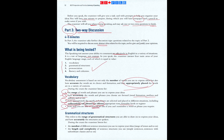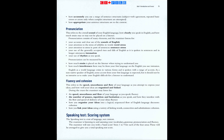Grammatical structures refers to the range of grammatical structures you are able to use to express your ideas and how accurately the structures are spoken. The examiner listens for the number of different sentence structures you use, the range of tenses, the length and complexity of sentence structures such as simple sentences and sentences with subordinate clauses, how accurately you use a range of sentence structures — such as subject-verb agreement — whether there are repeated basic errors or errors only when complex structures are attempted, and how appropriate your sentence structures are to the context.